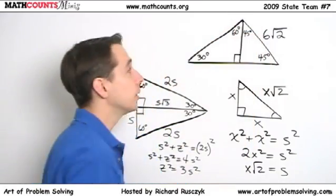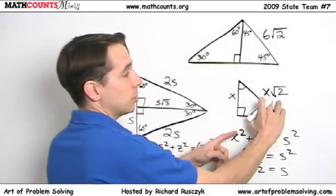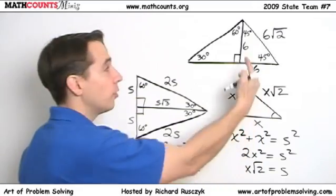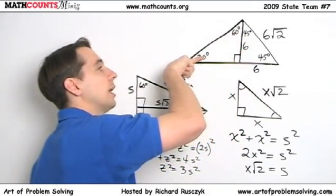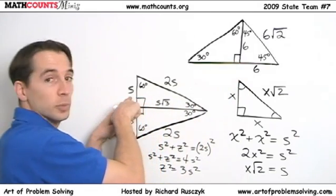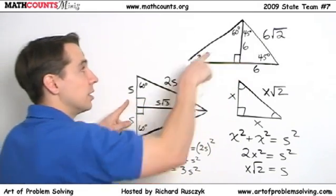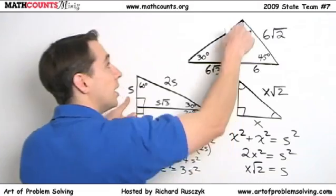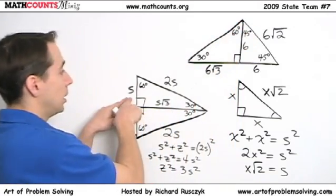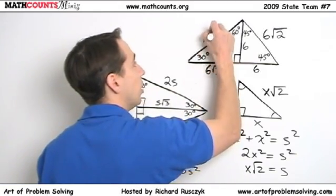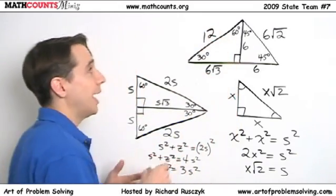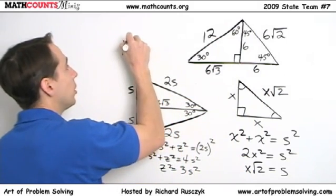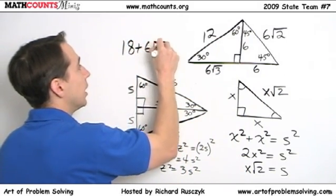So first, the 45-45-90 triangle, the hypotenuse is 6 times the square root of 2, so the legs both have to be 6. This leg is 6, this leg is 6. Now I move over to the 30-60-90 triangle and I've got the leg opposite the 30-degree angle is 6. So over here S would be 6. So then the side opposite the 60-degree angle would be 6 times the square root of 3. And the hypotenuse of this 30-60-90 triangle is double the leg opposite the 30-degree angle, which means it's 12. And I go back and check. The original problem asked for the sum of the lengths of the other two sides, which gives us 6 and 12 is 18 plus 6 times the square root of 3 as our final answer.